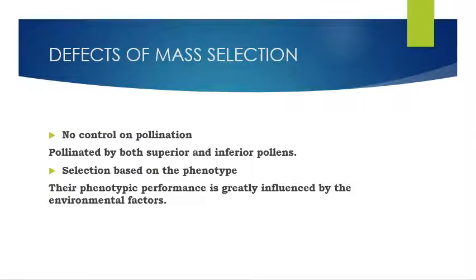Defects of mass selection: first, there is no control on pollination — the selected plants are pollinated by both superior and inferior pollens. Second, selection is based only on the phenotype, that is the plants are selected only based on their phenotypic performance, which is greatly influenced by environmental factors.